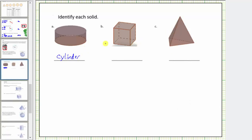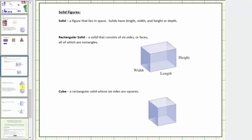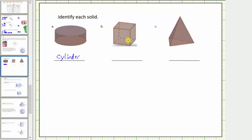Looking at the next solid, we need to decide whether this is a rectangular solid or a cube. A rectangular solid is a solid that consists of six sides or faces, all of which are rectangles. A cube is a rectangular solid whose six sides are squares. We are not given any measurements of the sides, and therefore we cannot assume all the faces are squares, so we will identify this as a rectangular solid.